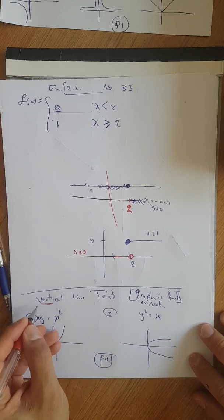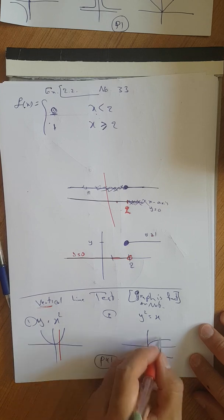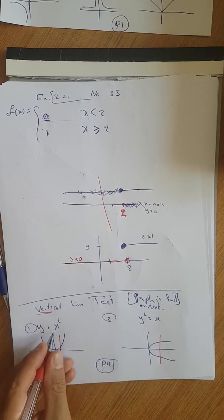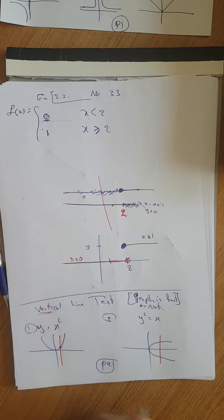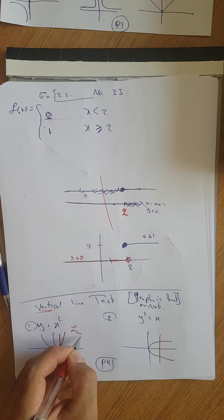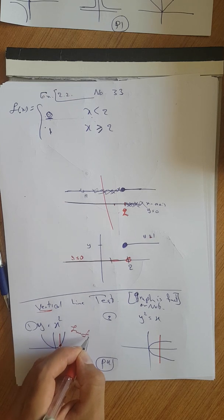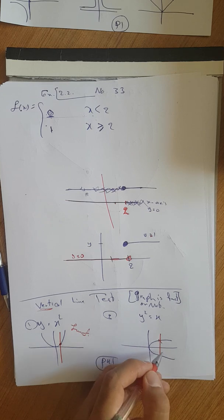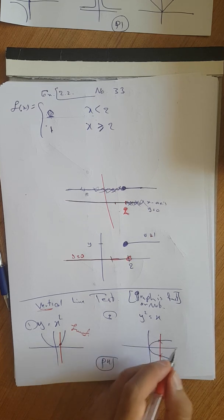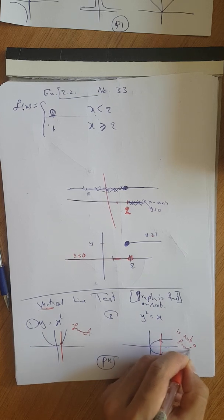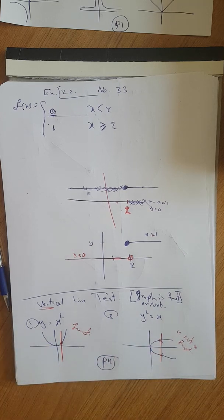Vertical line test: anywhere that you want to do it, if this line intersects our graph in one point, we see the graph is a function. Otherwise, if it's intersecting at two or more points, we see it's not a function.